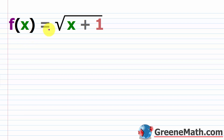So something like f of x equals the square root of x plus one. We're going to see this as a one-to-one function, and it does have an inverse, but we have to be really careful when we calculate. This has a domain restriction because when we work with the set of real numbers, we cannot take the square root of a negative. So we have the square root of x plus one, and this part cannot be less than zero.